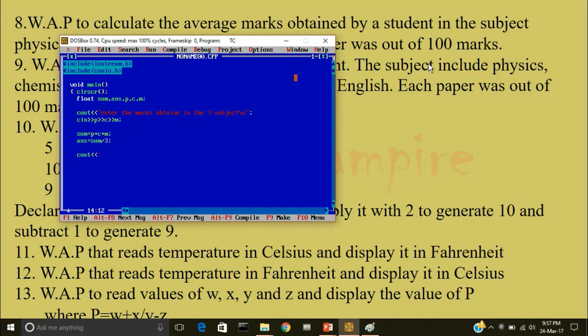Now I'll display the average marks, cout slash n average marks is less than less than answer.